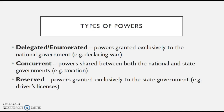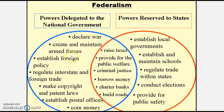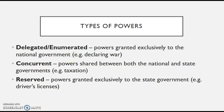The names for powers granted exclusively to the national government are delegated and enumerated powers, such as declaring war. For example, if the state of New Jersey decided to declare war on Morocco, that would be a big problem if Virginia, North Carolina, and the rest of the 49 states were not on board. You can't have certain states declaring war on other countries or ratifying treaties — that's why these delegated and enumerated powers are given just to the national government.